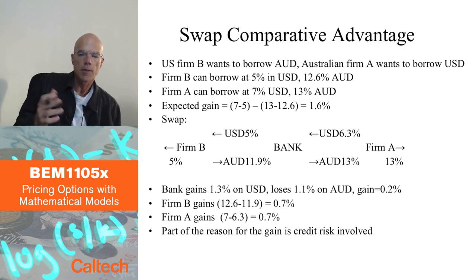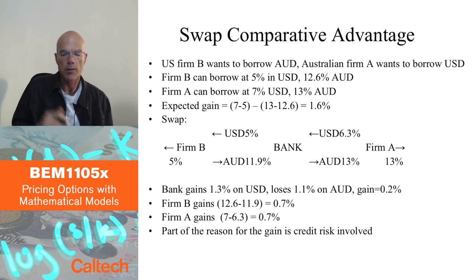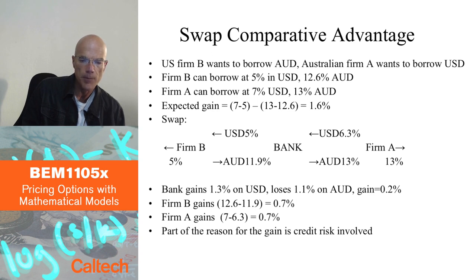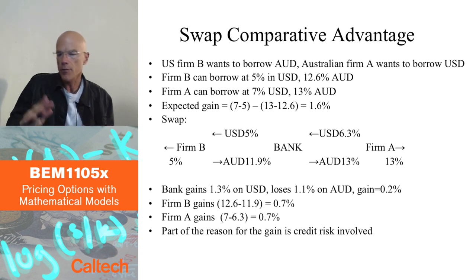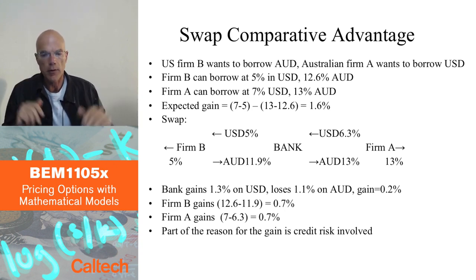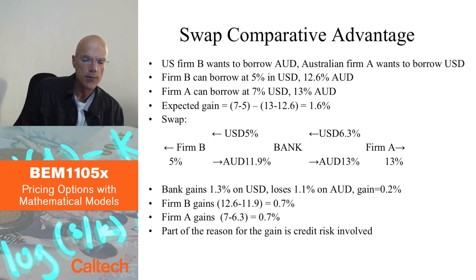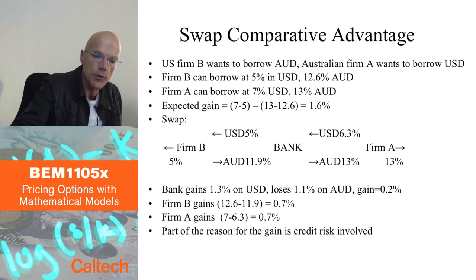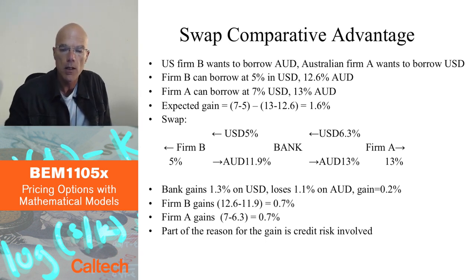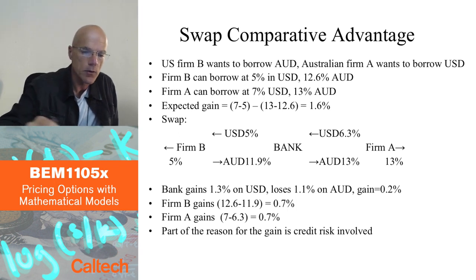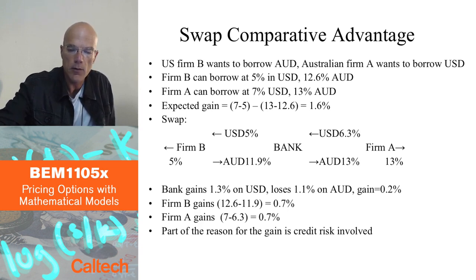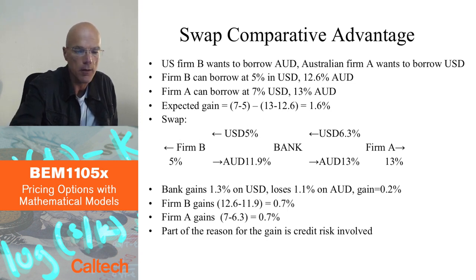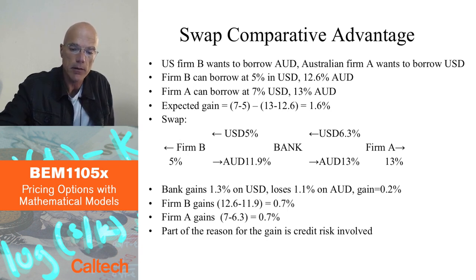Here is a typical example offered as a justification for why swaps might exist, called the comparative advantage of entering a swap. We imagine two firms. There is a US firm, firm B, which needs to borrow Australian dollars, and an Australian firm A, which needs to borrow American dollars. Firm B can borrow US dollars at 5% and Australian dollars at 12.6%. Firm A can borrow US dollars at 7% and Australian dollars at 13%.